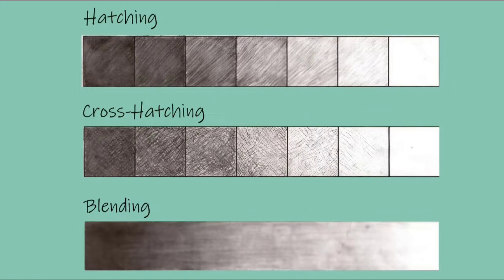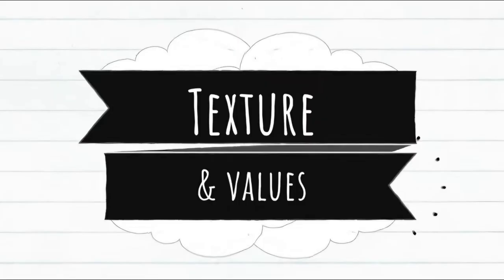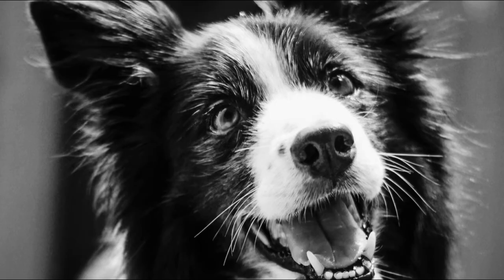The most common way to create value with shading is with hatching. Convincing shading is done by looking at the highlights and the shadows of the picture. The highlight is where the light hits the object, and the shadow is where the light cannot reach. The cast shadow is placed on the opposite side from the highlight.